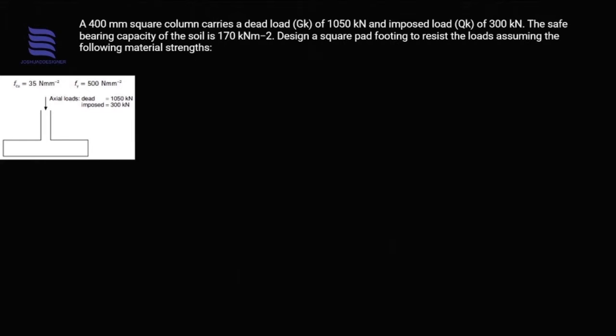In this particular theoretical example, we have a 400 millimeter square column that carries a dead load (Gk) of 1050 kilonewtons and a live load, the imposed load (Qk), of 300 kilonewtons.